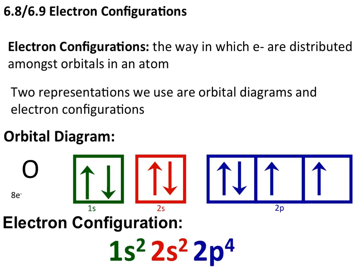This corresponds to what we would expect for the eight total electrons present in an oxygen atom. Two of them are present in the 1s, two are present in the 2s, and we have four present amongst the three 2p orbitals.